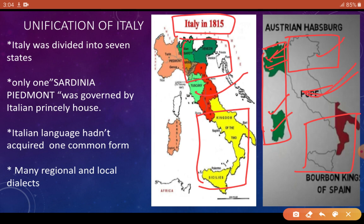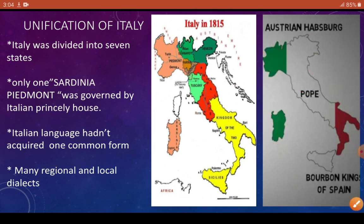Metternich and the Pope didn't want to unify Italy. But Victor Emanuel II strongly wanted to unify it. We have also read that at that time the feeling of nationalism was arousing in the people, and language played a very big role in motivating people. But in Italy, the Italian language hadn't acquired one common form — many regional and local dialects were used by the native people of Italy.